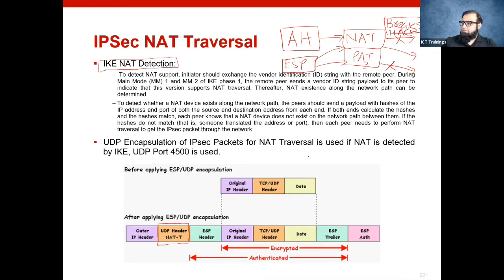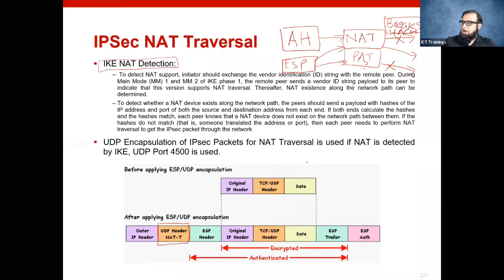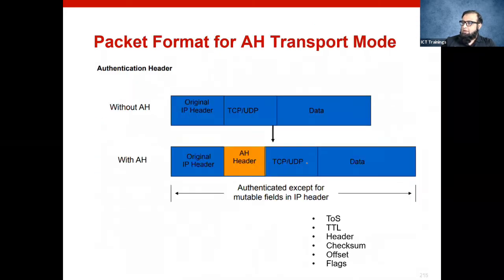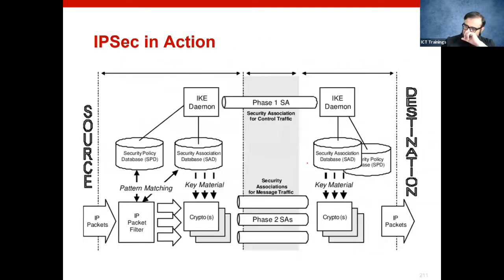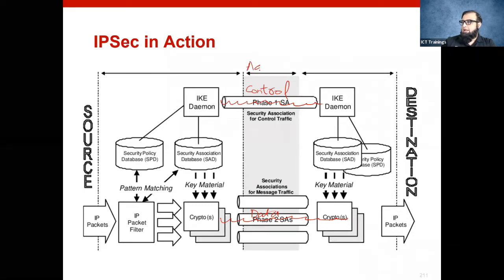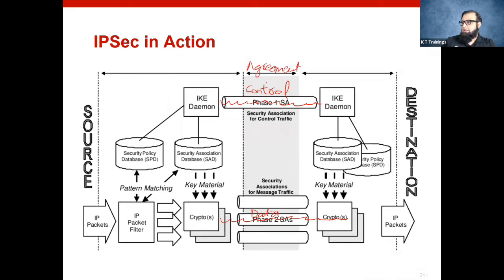As we understand from the architecture discussion, if you are using a Cisco router or Cisco firewall, you can use IPsec VPN to create two communications: one is your control communication and one is your actual data communication. The control communication establishes the security association between the two parties.